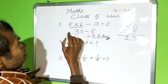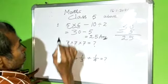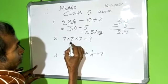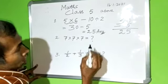Class 5. Now 7 into 7 into 7 equal to what?